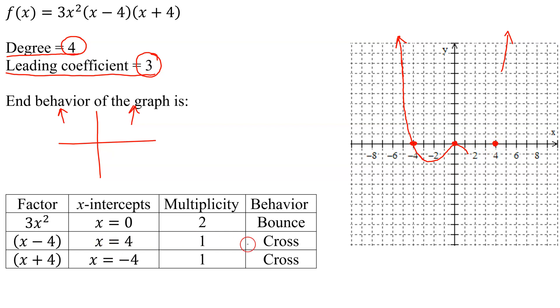And then finally, what happens when x equals 4? It's going to cross again. And that looks good, because if it goes down and crosses, then it'll keep going, and it will meet my other end behavior. So I just sketch that in.